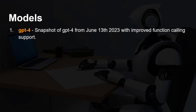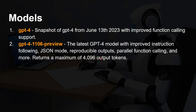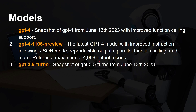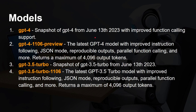So you've got the standard GPT 4 — a snapshot from June 13th, 2023. Then you've got GPT 4 1106 Preview, the latest GPT 4 model — that's the Turbo one with improved instruction following, JSON mode, and so on, returning a maximum of 4,096 output tokens. Then you've got GPT 3.5 Turbo, a snapshot from June 13th as well, and GPT 3.5 Turbo 1106, the latest GPT 3.5 Turbo model with improved instruction following, JSON mode, outputting a maximum of 4K tokens — and eventually this will become the default GPT 3.5 Turbo model.